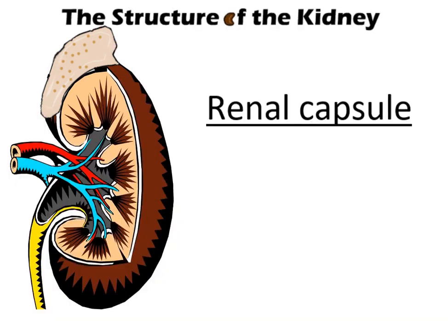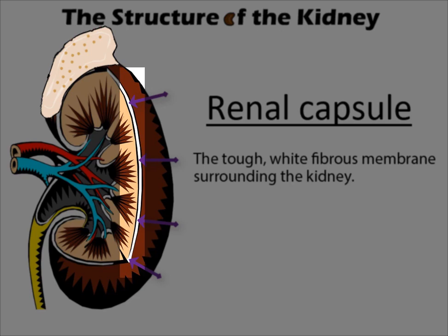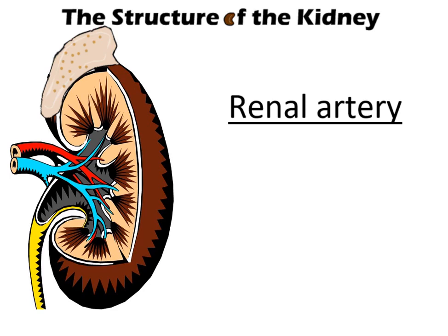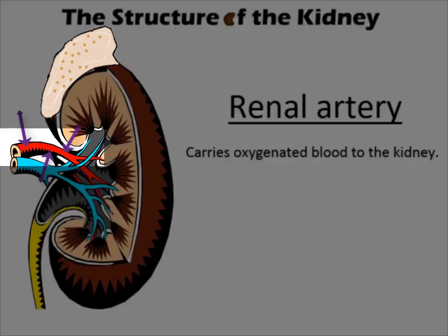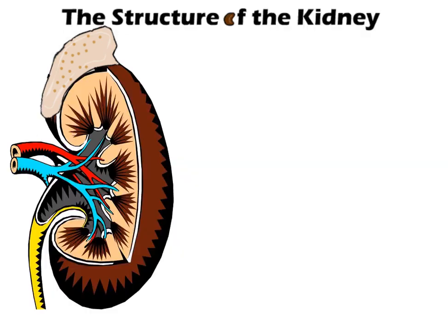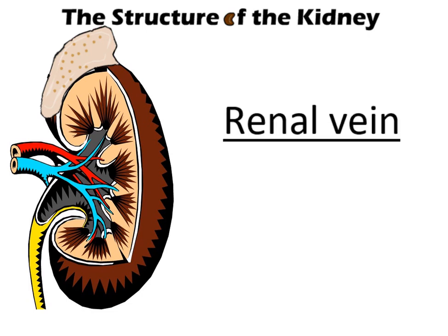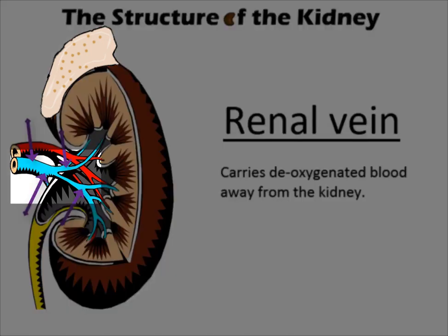Renal Capsule: the tough white fibrous membrane surrounding the kidney. Renal Artery: carries oxygenated blood to the kidney. Renal Vein: carries deoxygenated blood away from the kidney.